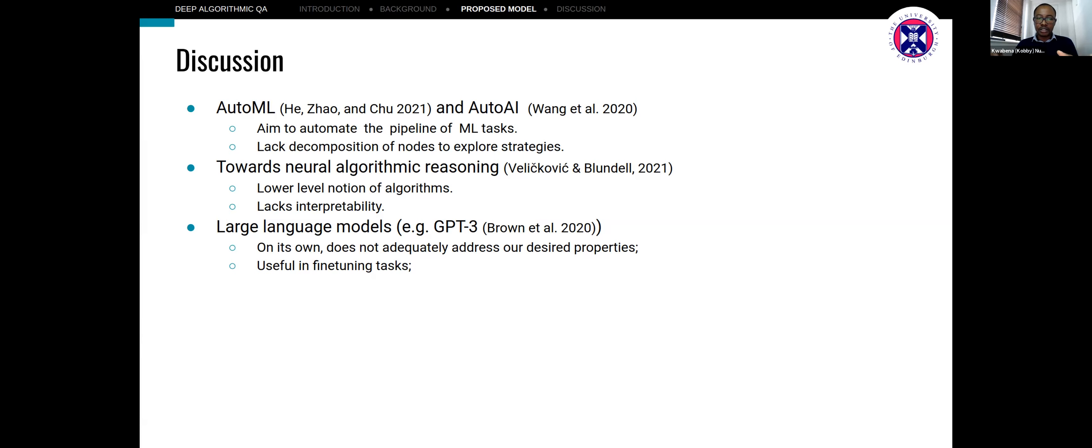And then there is the work on large language models. Neural algorithmic models on their own, we do not think they are capable of tackling these kinds of problems. However, they are going to be very useful in fine-tuning tasks, especially when they include knowledge about the world.